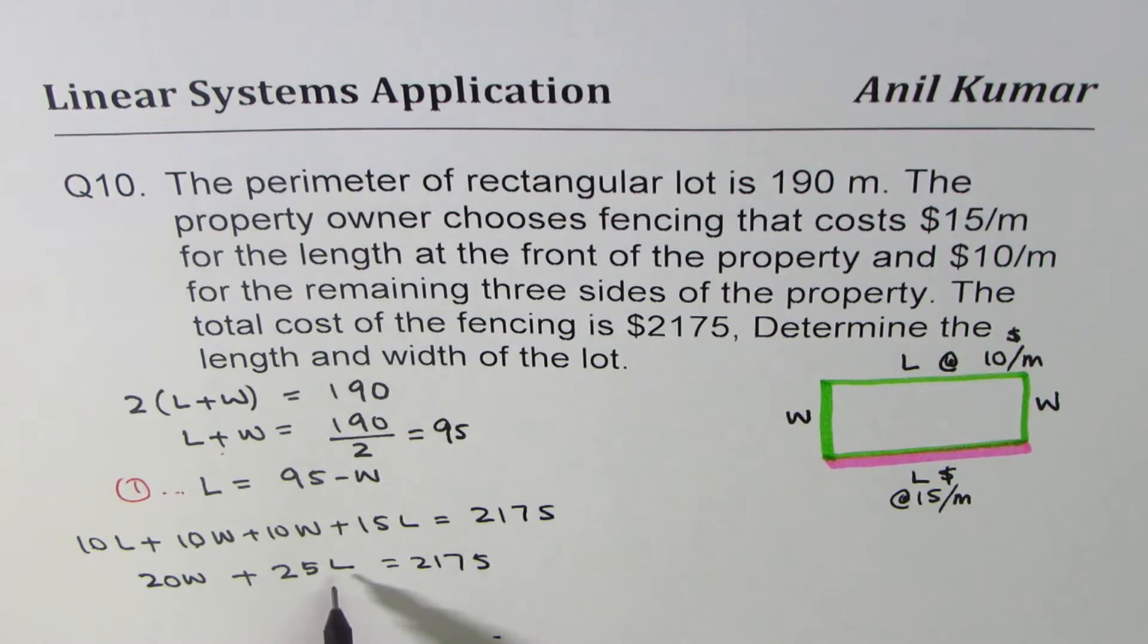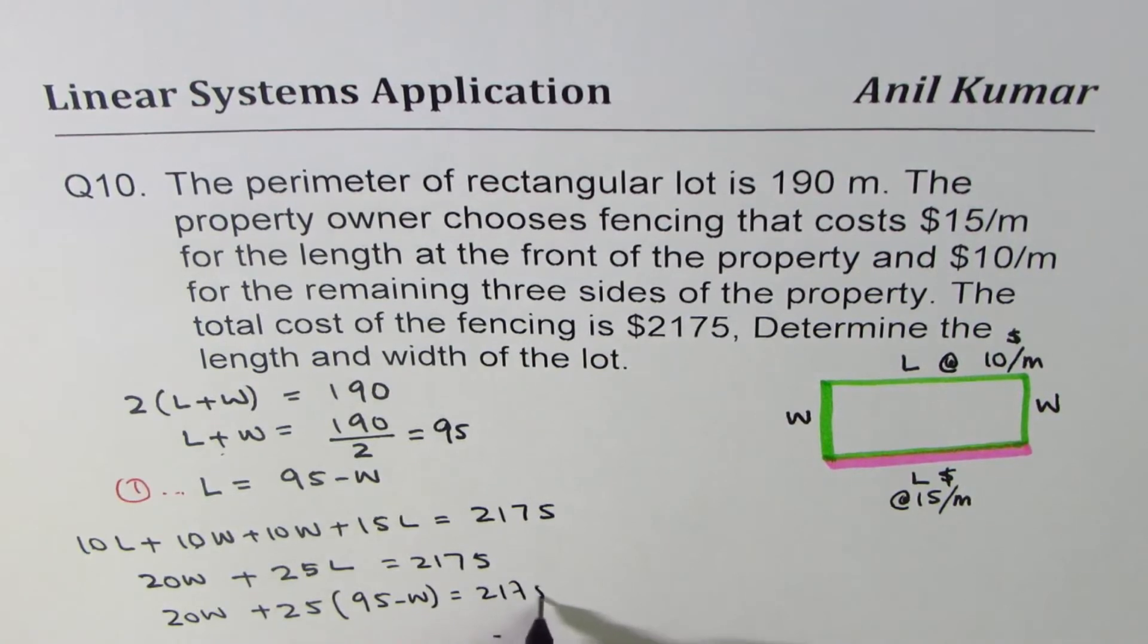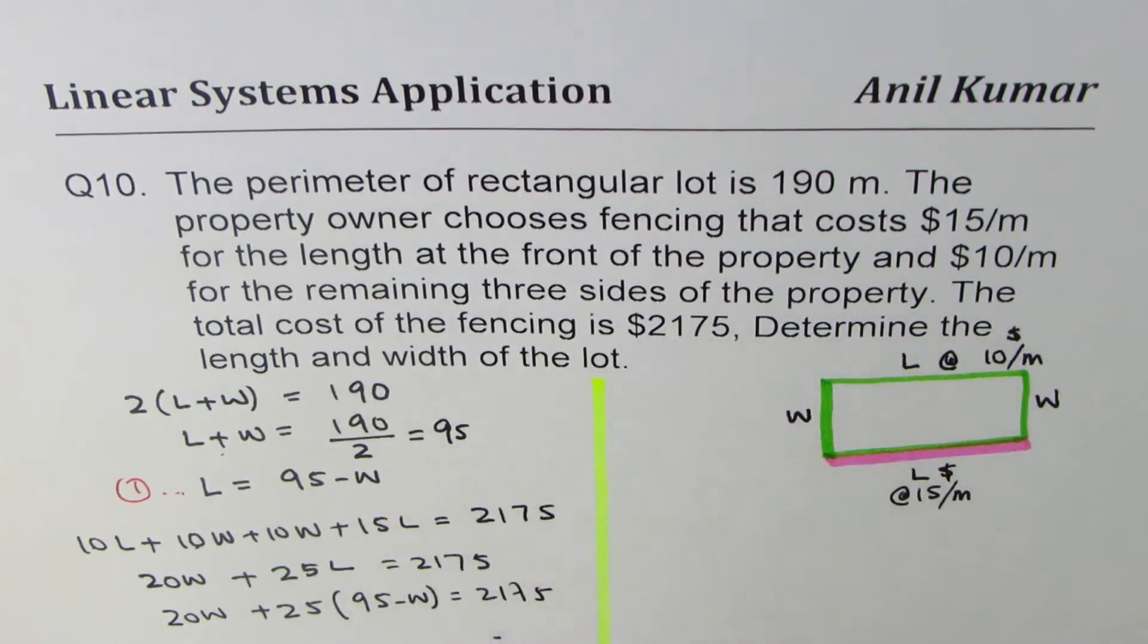And now we'll replace L with 95 minus W. So we have 20W plus 25L equals to 2175. So that gives you an equation which is in terms of only one variable. So we can open this up.